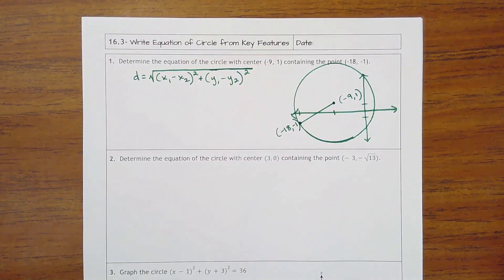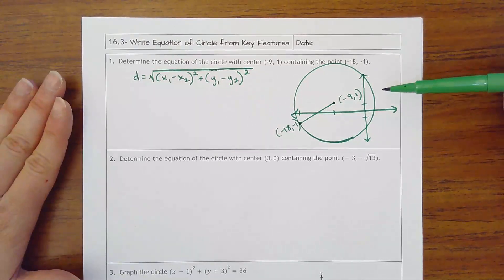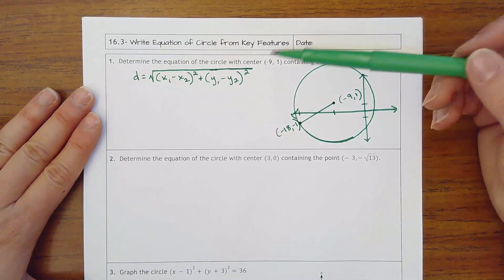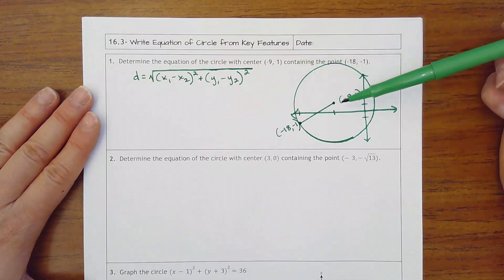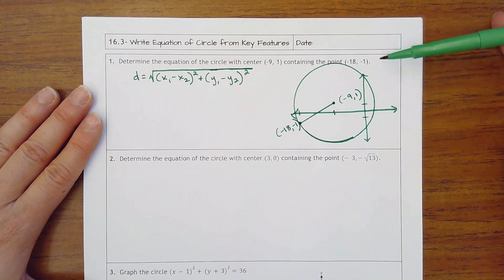Lesson 16.3 is writing equation of a circle from key features. This one has no picture, but I want to draw a picture on the first one just to help you figure out what you're trying to do. It's going to say determine the equation of the circle with the center at this point and then it contains another point.